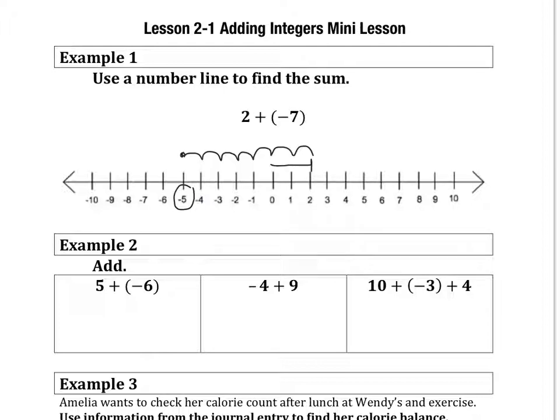In example 2 we have 5 plus negative 6. 5 being a positive value, 6 being a negative value. You want to decide which one there's more of or the absolute value is larger, which would be 6 being the negative number. So your answer is ultimately going to be negative. 5 plus negative 6 would be the difference of 1. If they're opposites you can subtract and keep the sign of the larger.